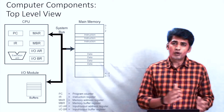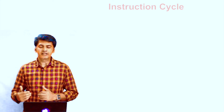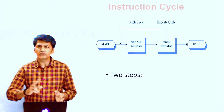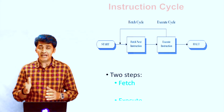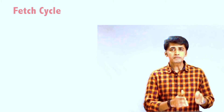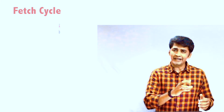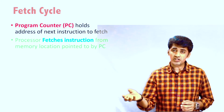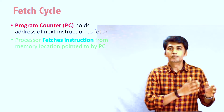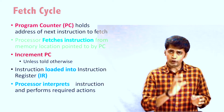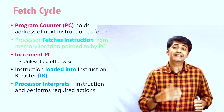Next we will see what the instruction cycle is. On screen you can see the basic block diagram of the instruction cycle, which shows two different steps: the fetch cycle and the execute cycle. During the fetch cycle, the address is taken from the program counter, and based on that, the instruction is fetched from the exact memory location. That instruction is then moved to the instruction register, where the processor interprets it for the data fetch.